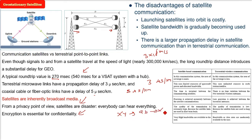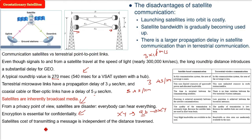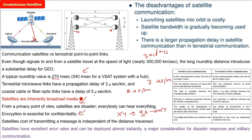The cost of transmitting a message via satellite is not dependent on the distance — it is the same wherever you send it, whether near or far. The satellite cost of transmitting any signal is independent of distance. Satellites also have excellent error rates — that is, low error rates — and they can be deployed almost instantly.